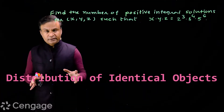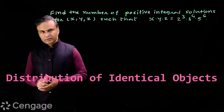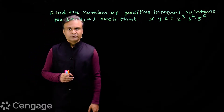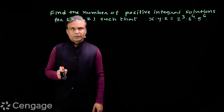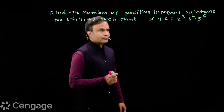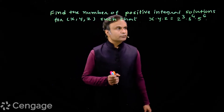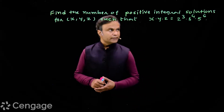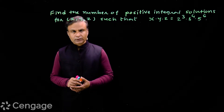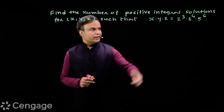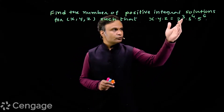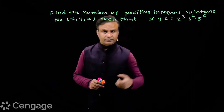Here we have a very interesting application of this concept. The question is: find the number of positive integral solutions for a triplet such that the product x·y·z equals 2³ multiplied by 3⁴ multiplied by 5⁶. Here the value is in the form of prime factorization, where 2, 3, and 5 are prime numbers.